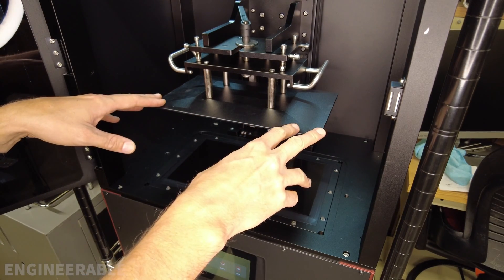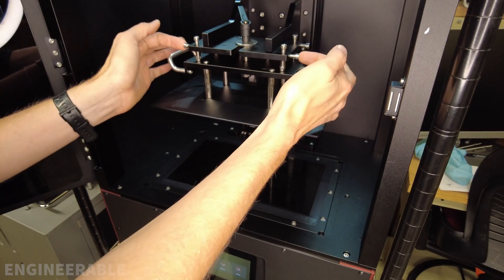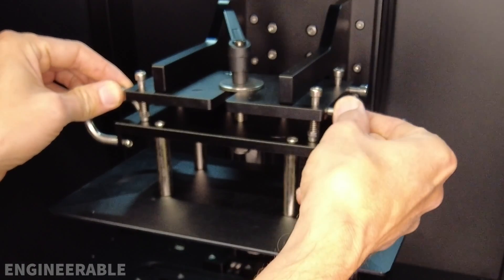This is how you level the build plate of the Elegoo Jupiter per the manufacturer's instructions. These are the four leveling lock screws. The first thing you do is loosen up these screws.